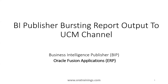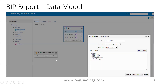Hello all, welcome to oratrains.com. In this session we'll discuss how to burst a BIP report by sending the output to a UCM channel. This is a sample BIP data model, and in this model we have a column called party ID which we are considering as the burst key.